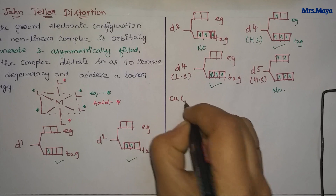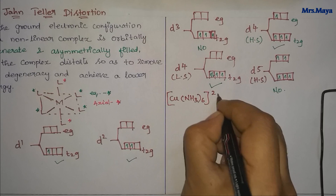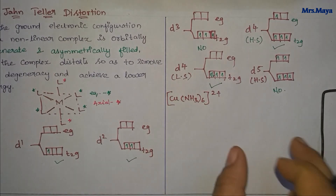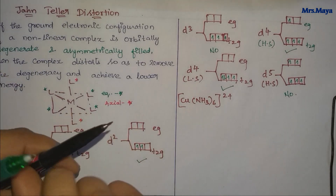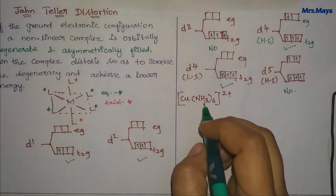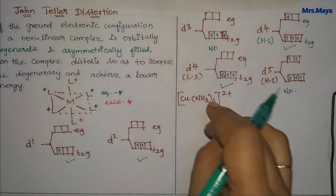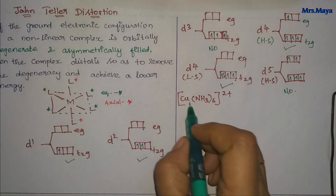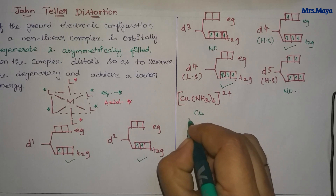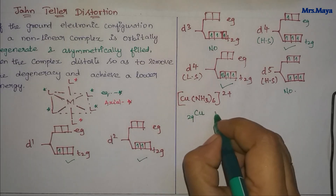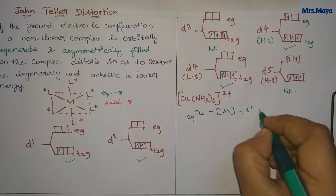Now we will take the copper complex — the hexamine complex of copper. Copper is in the 2+ oxidation state. Copper has atomic number 29. The D9 system in 2+ oxidation state has configuration 4S2, 3D9. Actually, the ground state is 4S1, 3D10, but in 2+ state it becomes 4S0, 3D9. So D9 system is copper.